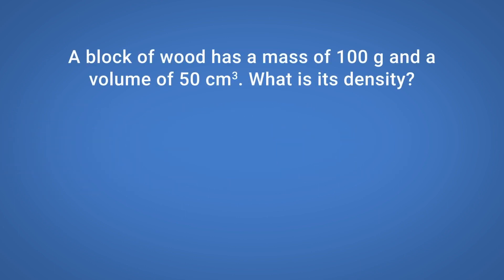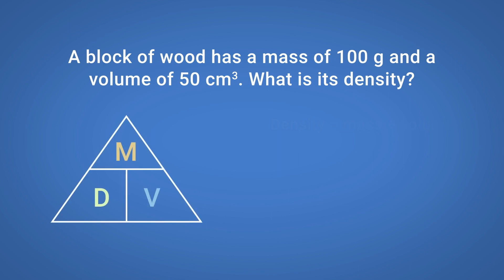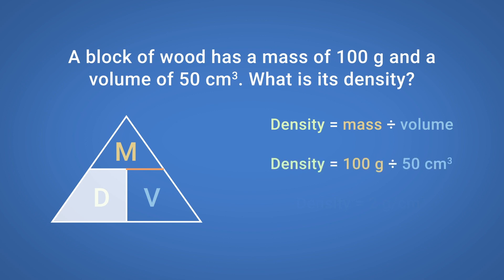A block of wood has a mass of 100 grams and a volume of 50 centimetres cubed. What is its density? Use the formula triangle to help. Cover up density to reveal the formula: density equals mass divided by volume. Substituting the values: density equals 100 grams divided by 50 centimetres cubed, giving a density of 2 grams per centimetre cubed.